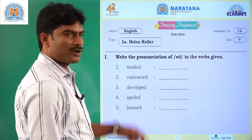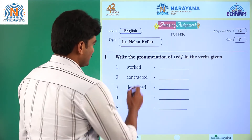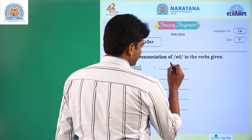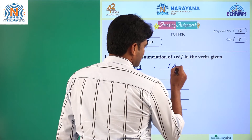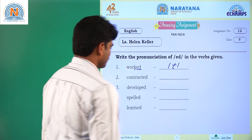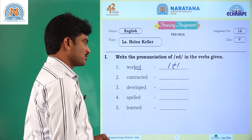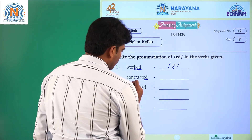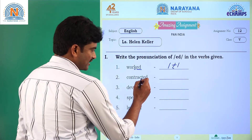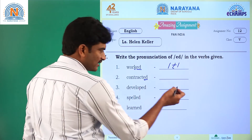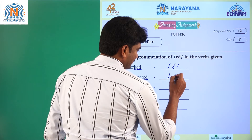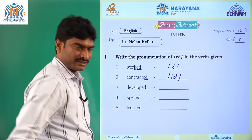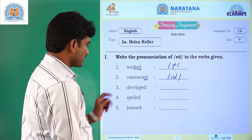Question number 1: worked. Here ED is added to the K letter and the sound is T sound. Question number 2: contracted. Here ED is added to the contract and the ED comes under the IT sound. Contracted.